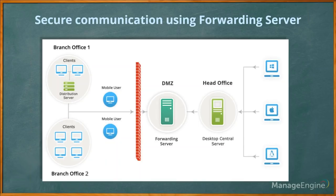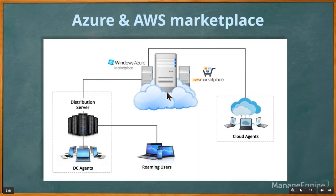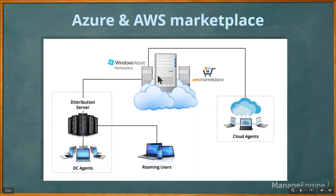If you manage more roaming users, having the server in the cloud is an advantage. You can place the Desktop Central server in AWS or Azure as a cost-effective solution, avoiding hardware infrastructure and maintenance costs. MSPs can manage multiple machines using cloud, and with a distribution server in your network contacting the AWS or Azure instance, client machines can be managed effectively.